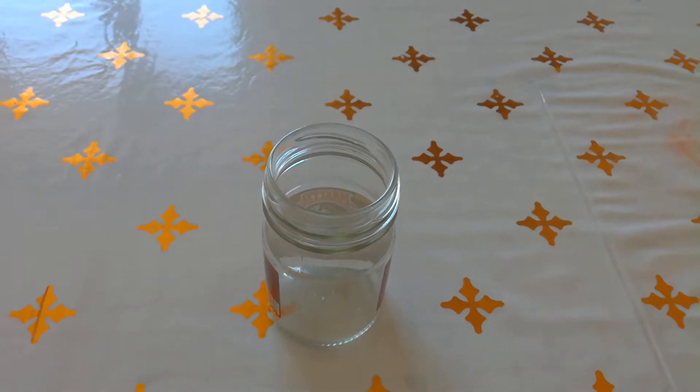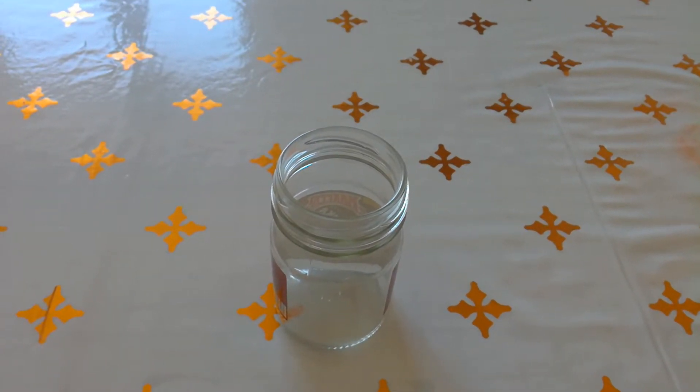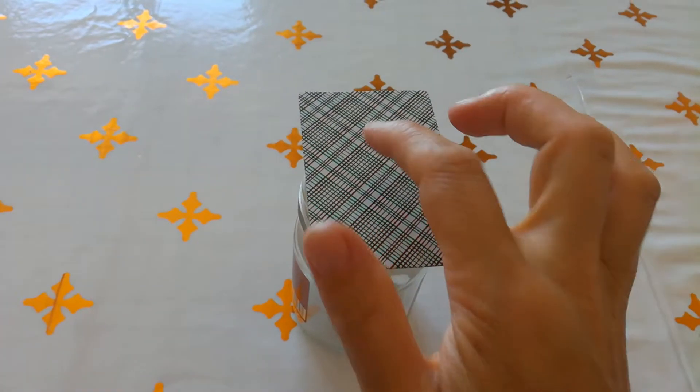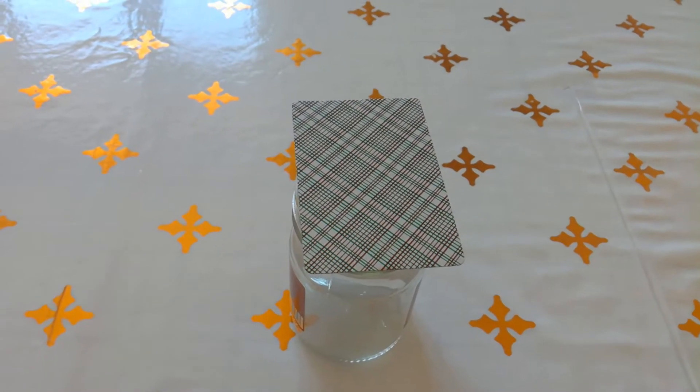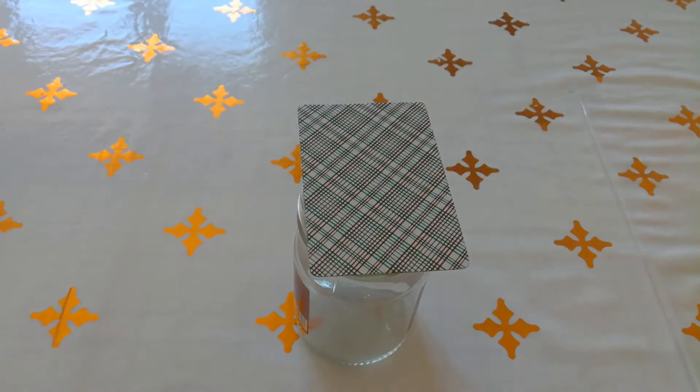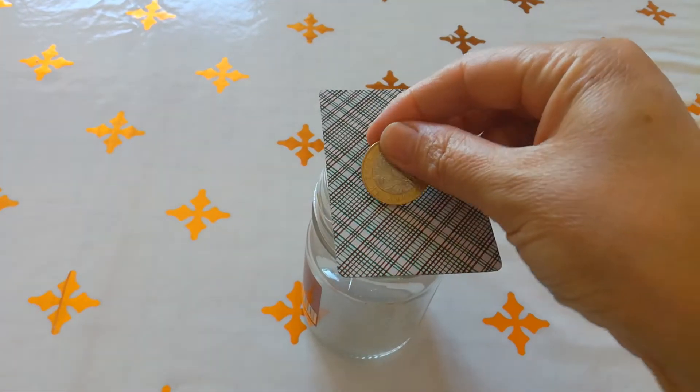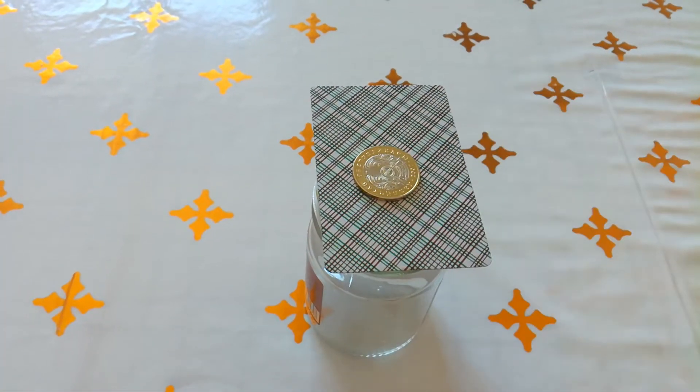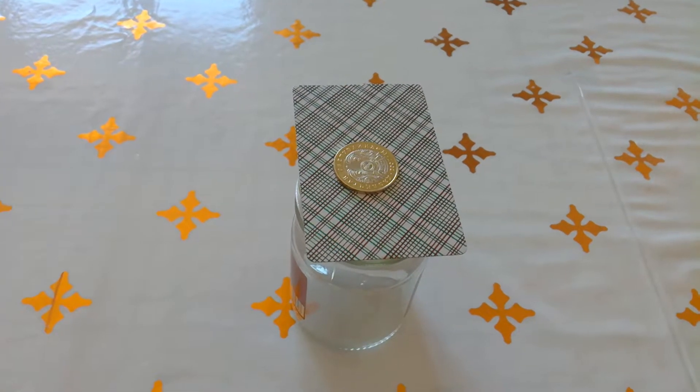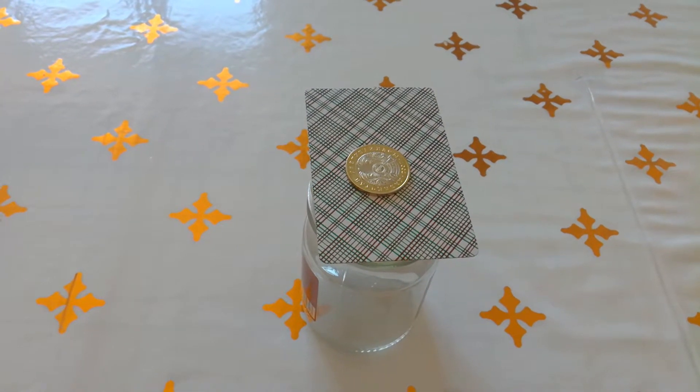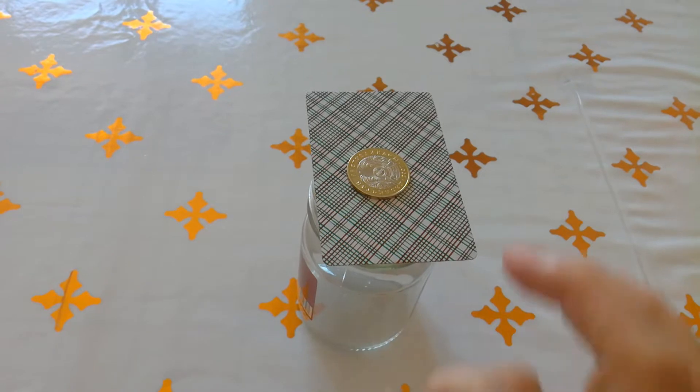Place the card on top of the cup. Then place the coin on top of the card. After placing all materials, flick the card straight ahead.